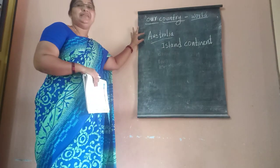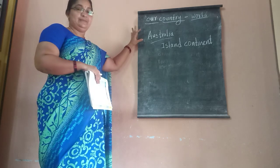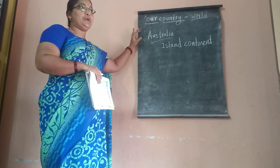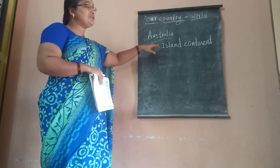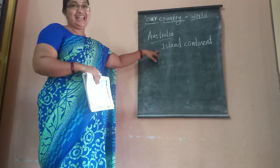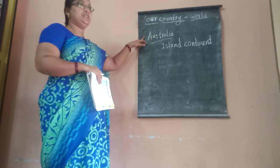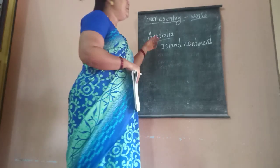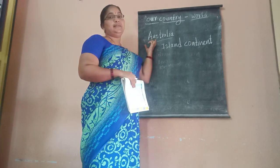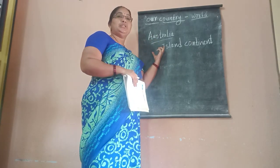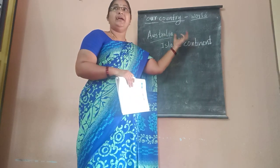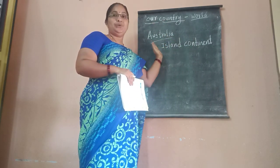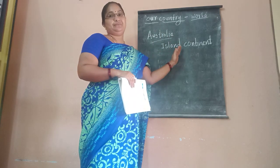Australia is the smallest continent in the world. It is also called the island continent. Australia is located in the south east of Asia, and it is surrounded by the Indian Ocean and the Pacific Ocean.